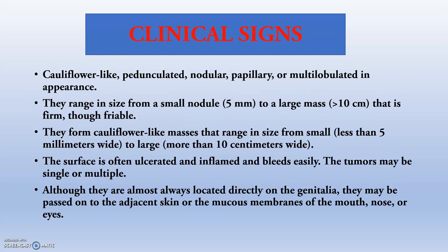Regarding clinical signs, in the first phase we will see a cauliflower-like pedunculated, nodular, or multi-lobular papillary appearance. They range in size from a small nodule of 5 mm to a large mass of greater than 10 cm diameter, that is firm though variable. They form cauliflower-like masses that increase in size over time. The surface is often ulcerated and inflamed, bleeds easily, and the tumours may be single or multiple. Since it is present in the genitalia region, the animal will be having great pain.